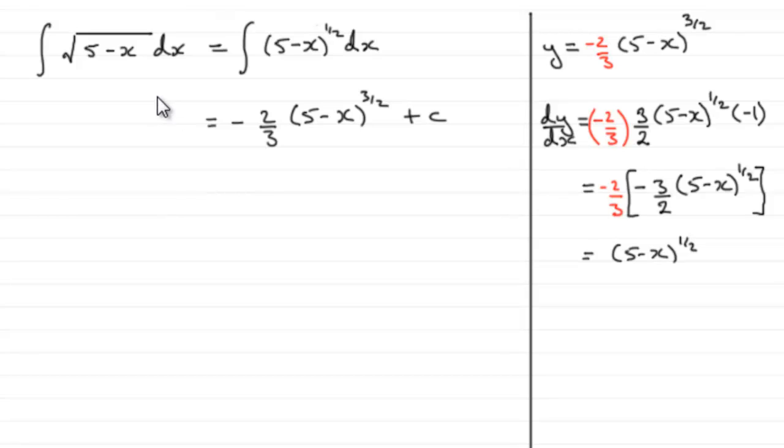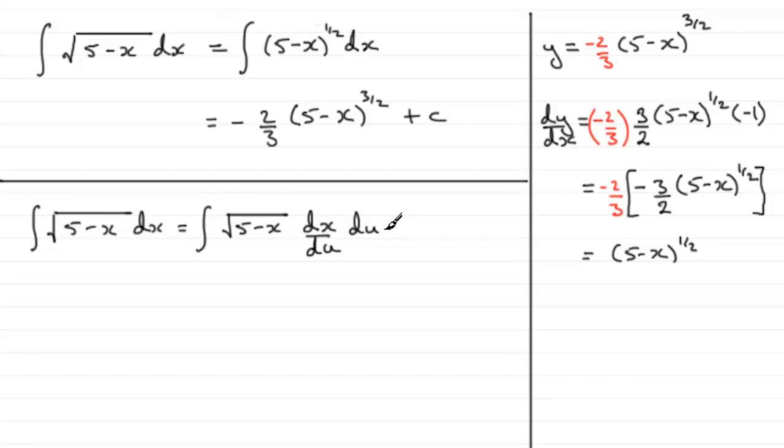So I'll run through that method with you now. So if we're integrating this by substitution, let's just copy this out: the integral of the root of 5-x with respect to x. Then this is going to be exactly the same as integrating this function of x with respect to x, but we can change this. Let's just put that as root of 5-x, but instead of having the dx here, we can change this to dx/du, as long as we integrate with respect to u.